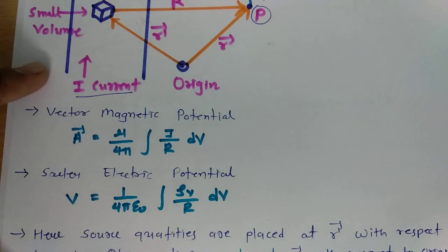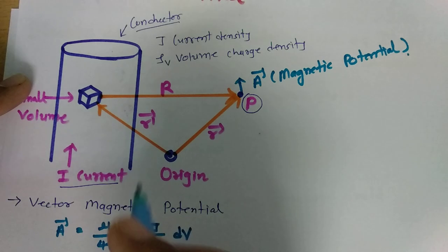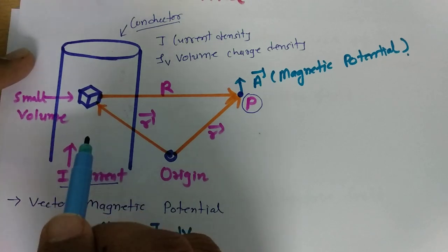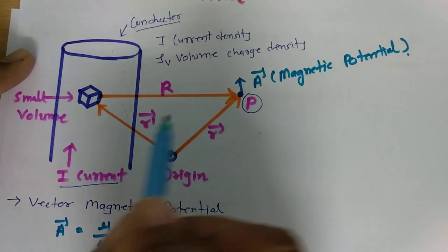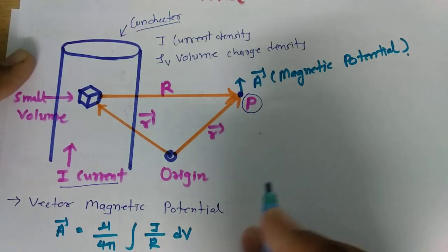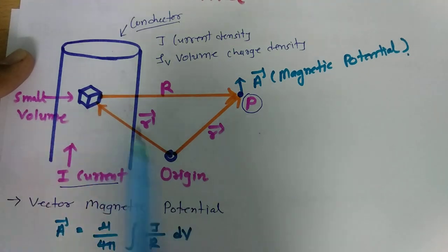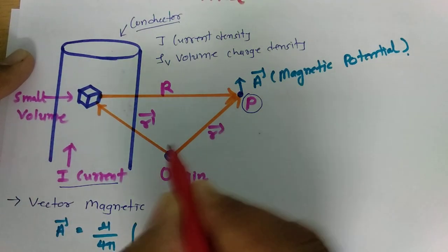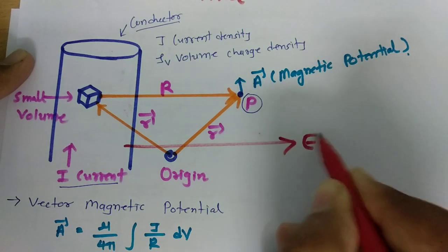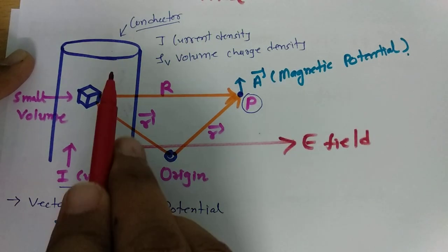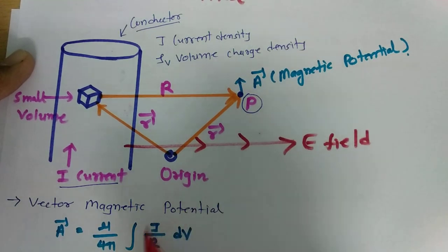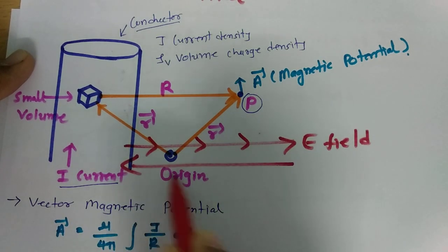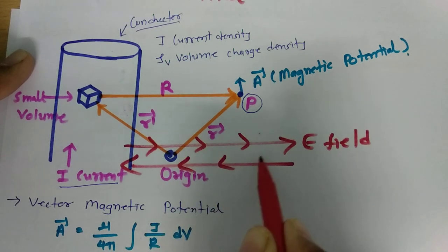But when we talk about a time-varying field — meaning AC current is passing through this conductor — the field will be varying with respect to time. Both magnetic field and electric field will vary. For example, if current is flowing in this direction and current is positive, electric field goes in this direction. As current starts to decrease, electric field will decrease. As current goes negative, electric field direction changes. As current decreases further, electric field will decrease again.